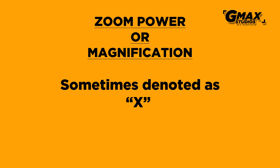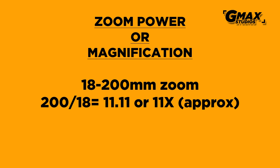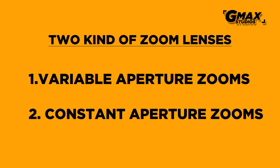Coming back to zooms: the magnification power of a zoom lens is expressed as 'x'. So an 18-200mm zoom lens will be said to be an 11x zoom, because 18mm times 11 equals approximately 198mm, which is close to 200mm. Because the difference between the widest end and the telephoto end is 11 times, it is said to be an 11x zoom. This applies to all zooms — you often see zoom lenses advertised as 11x, 20x, 30x, and so on. This is simply the magnification power: the ratio between the widest and telephoto end.